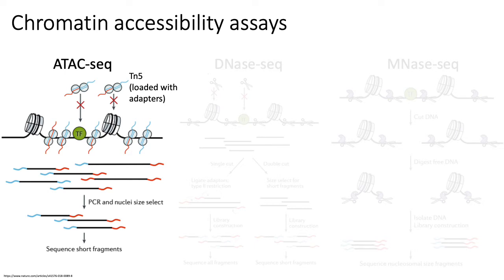ATAC-seq is generally the most widely adopted chromatin accessibility assay right now, because compared to, for example, DNase-seq, it's more robust, more reproducible, and the protocol is generally pretty easy. Most importantly, the amount of input cells needed is relatively small. For bulk ATAC-seq, you can perform this assay with as few as 500 cells, and the total experiment takes somewhere on the order of two hours. There's also a commercial product available to do even single-cell ATAC-seq.